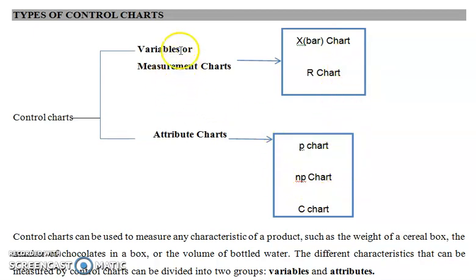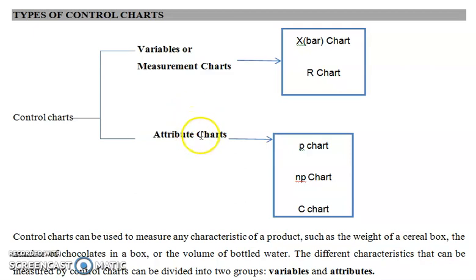Products under control charts for variables are those whose quality depends on a variable that can be measured. For example, 100 bags of sugar each should have 1 kg — quality depends on the weight, which is measurable. Control charts for attributes cover products whose quality depends on appearance or a yes/no judgment — if it looks good it is accepted, if not it is rejected. All products whose quality is judged as good or bad come under control charts for attributes.